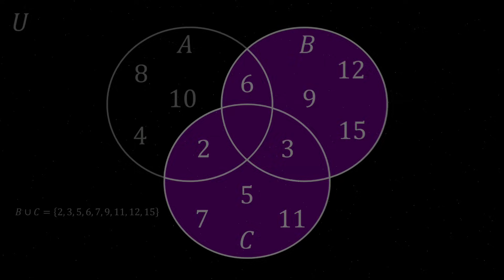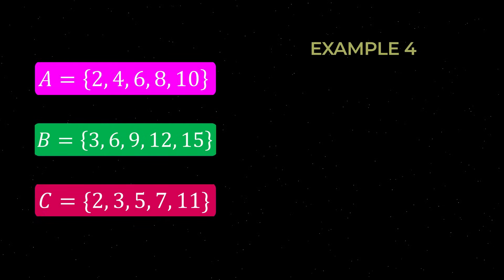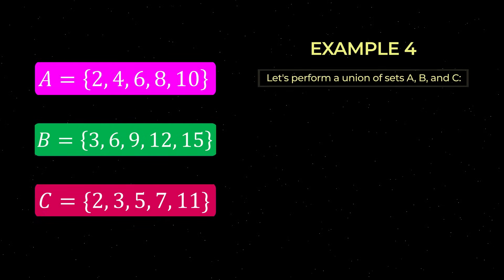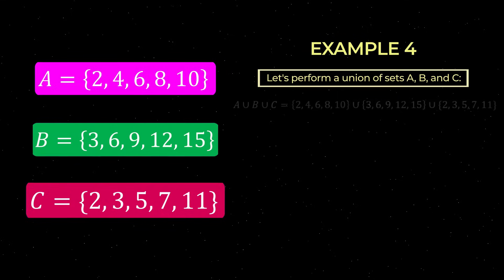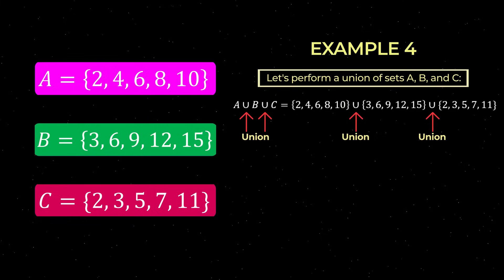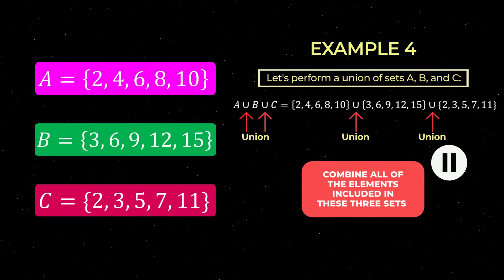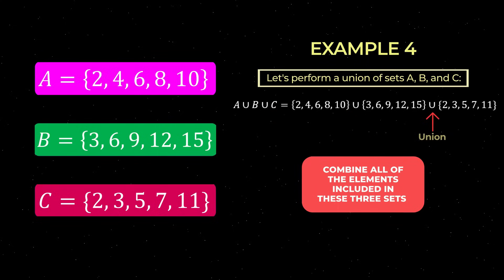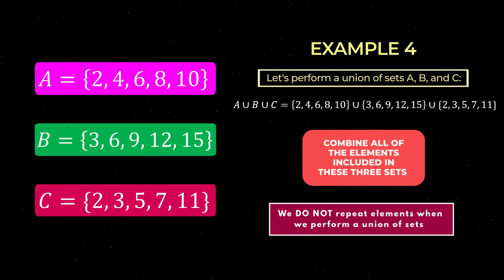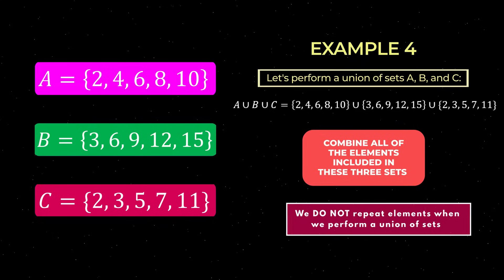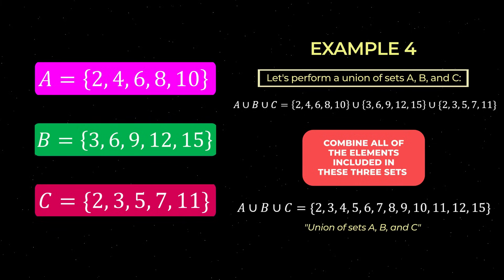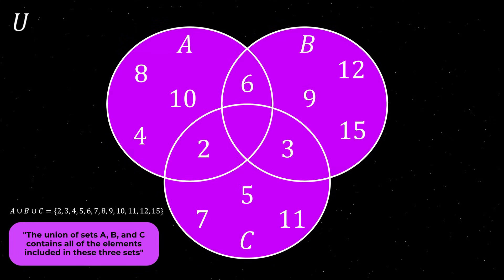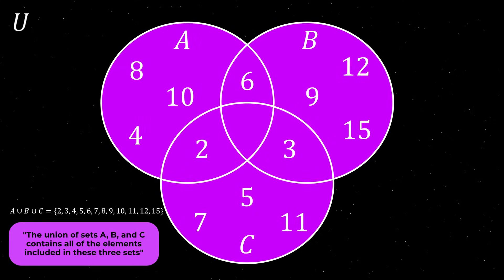Let's return to our sample sets to go through yet another example. Let's go a step further now and perform a union of sets A, B and C as indicated here. As an exercise, pause this video and try to solve this yourself, and when you have done so, press play and I will go through the solution. Combining all of the elements included in these sets and not repeating the elements that the sets have in common, we obtain the following. Let's now illustrate this set on our Venn diagram. As you can see, the union of sets A, B and C is the area occupied by all three of these sets.